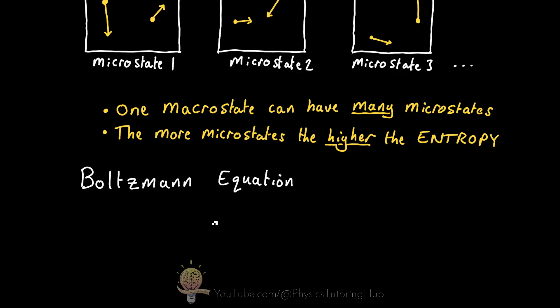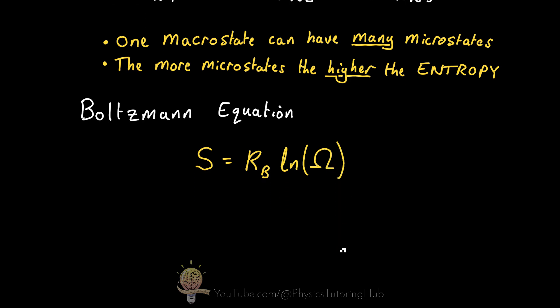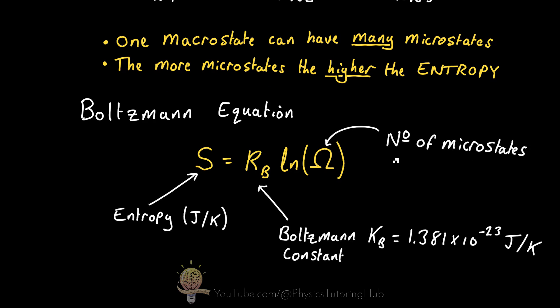So what is the Boltzmann formula? The Boltzmann formula tells us that the entropy of any given system is equal to the Boltzmann constant multiplied by the natural logarithm of the number of microstates that correspond with our current macrostate. And as you can see here, the more microstates we have, the higher the entropy is going to be.